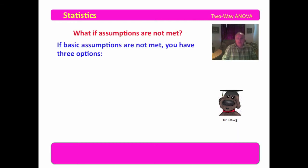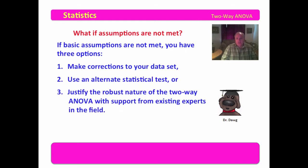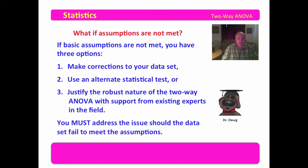What if the assumptions are not met? If the basic assumptions are not met, you have three options: you can make corrections to your data set, you can use an alternate statistical test, or you could justify the robust nature of the two-way ANOVA with support from existing experts in the field. Should you do the latter, in every area where an assumption is not met, there's an expert in statistics who says the two-way ANOVA is robust — but the danger is there are also experts that say it doesn't work. You must address the issue should the data set fail to meet the assumptions.